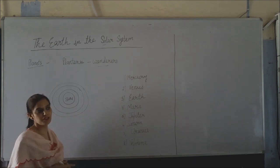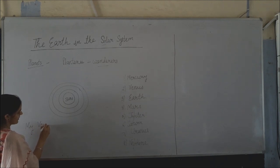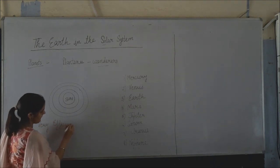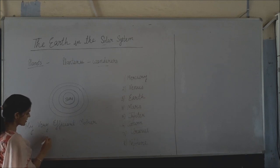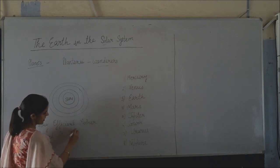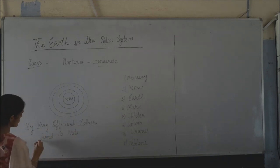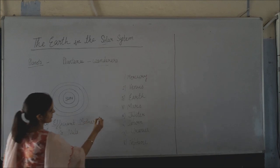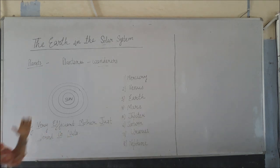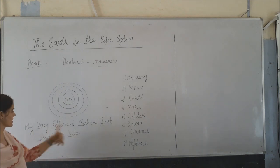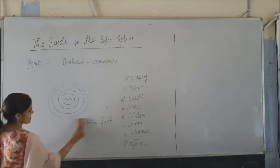To learn these planets in order of their distance from the sun, you can memorize a single sentence: 'My Very Efficient Mother Just Served Us Nuns.' This helps you remember Mercury, Venus, Earth, Mars, Jupiter, Saturn, Uranus, and Neptune in order.